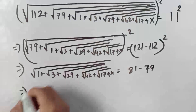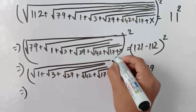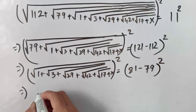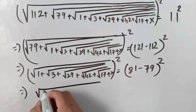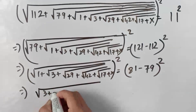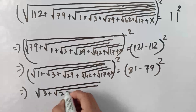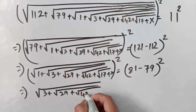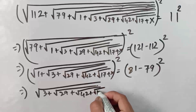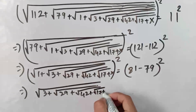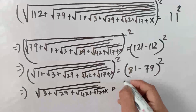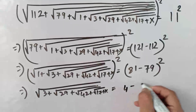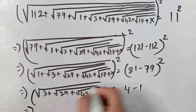Now what we will do, we just square both sides of this equation again. It comes: square root of 3 plus square root of 29 plus square root of 42 plus square root of 17 plus x, equals to 4 minus 1.